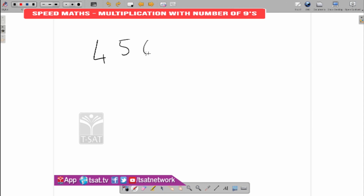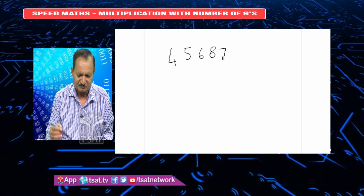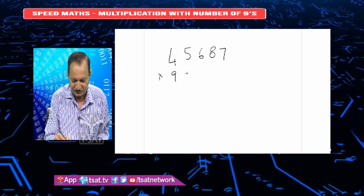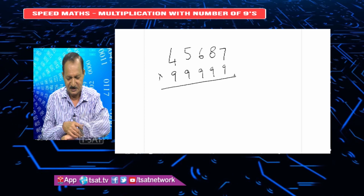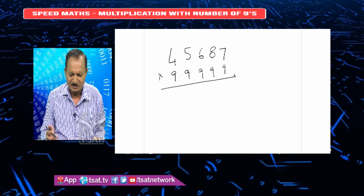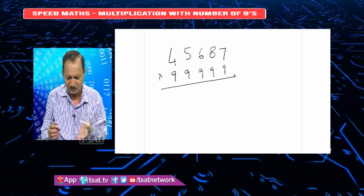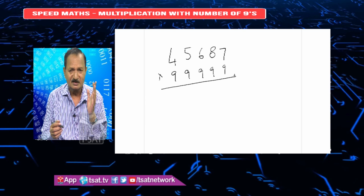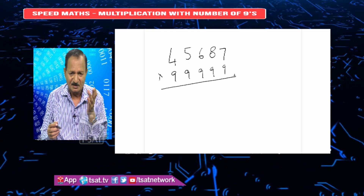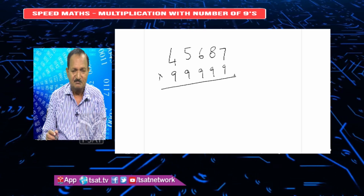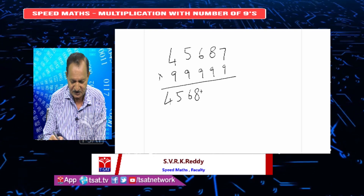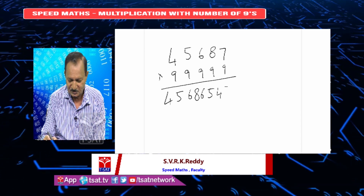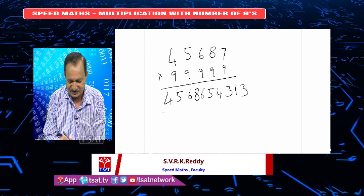Let us take the number 45687. How to multiply with 99999? Generally, if you want to multiply this, it will take a lot of time. Now, any number of 9s — let there be 5 nines, or 50 nines, or 500 nines — we can do it in just a few seconds. That is the amazing character of Speed Math. The answer for this problem is 4568654313. This is the answer.